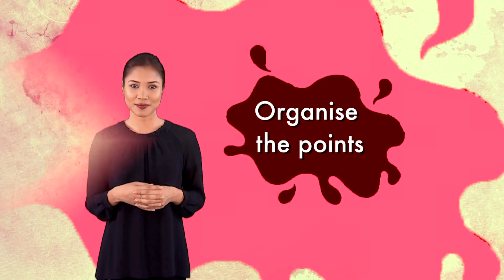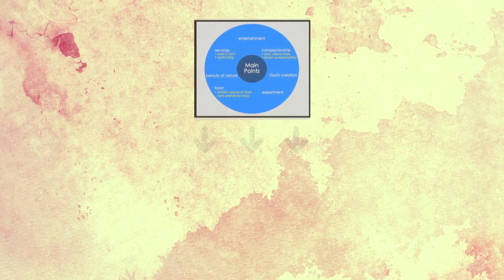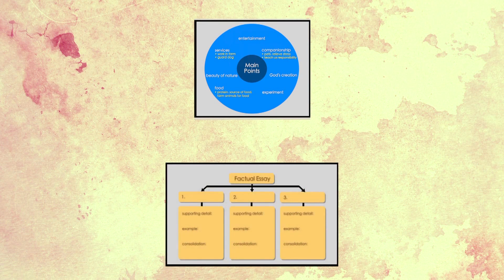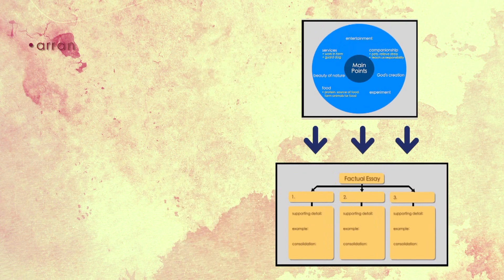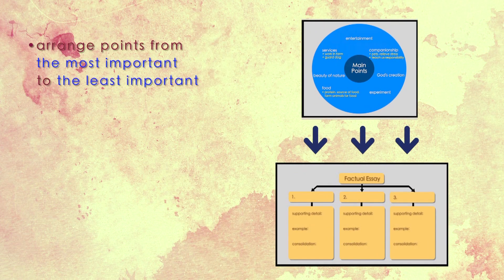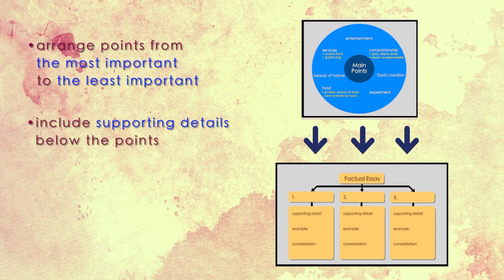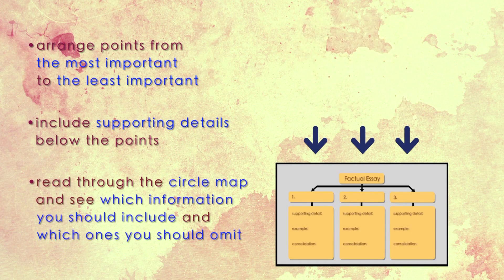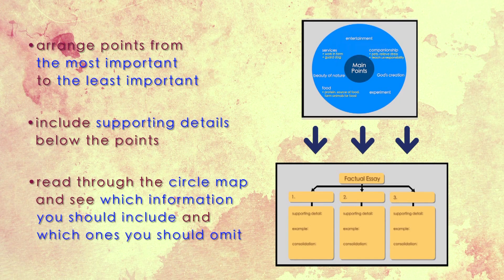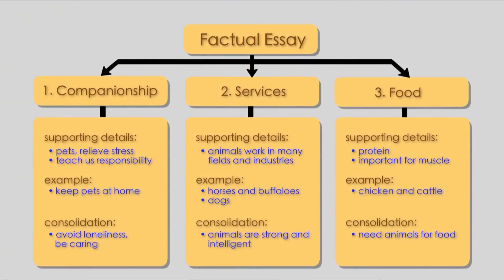Organize the points. Now transfer all the points into this tree map. It is very important that you arrange your points from the most important to the least important. Also, include your supporting details below the points. Read through the circle map and see which information you should include and which ones you should omit. This is an example of my tree map — notice how I have arranged my main ideas and supporting details.